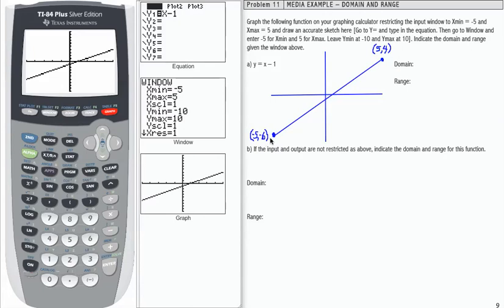Now to identify the domain and range, what I'm really doing for each one, for domain, I'm looking at the set of allowable input values. So if I take a look at my graph here, my inputs start here and travel to here. So if I look at just the inputs, I'm going to draw a little shading there on the x axis.